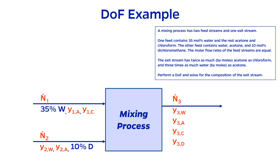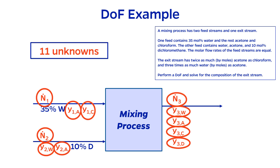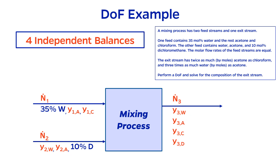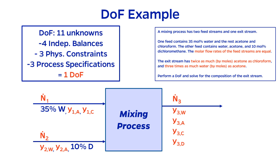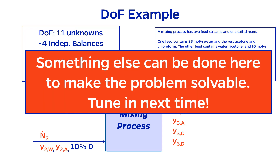Start, as always, with the fully labeled process flow diagram. Not many values are given, so we have plenty of unknowns — 11 to be exact. How many equations are there? There are four species, so four independent material balances. Each of the three streams has a physical constraint that I could write, and there are three process specifications as well. Four plus three plus three equals ten. Eleven unknowns minus ten equations gives us one degree of freedom, meaning that the problem doesn't appear solvable. However, there is actually something else that I can and must do in order to solve this problem, but I haven't taught you what that is yet, and this is a topic for next time on Material and Energy Balances.